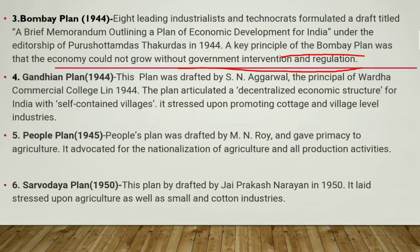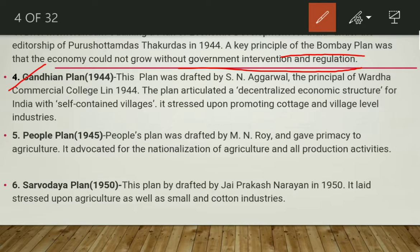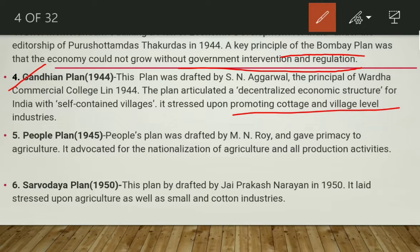The Gandhian Plan came in 1944 under Sriman Narayan, also known as S.N. Agarwal, of Wardha Commercial College. The plan articulated a decentralized economic structure for India with self-contained villages, and stretched upon promoting cottage and village-level industries. This plan is important because it comes with the concept of economic decentralization.